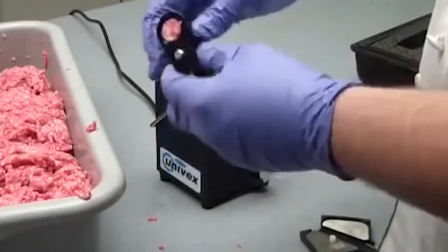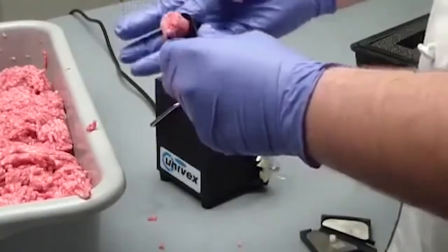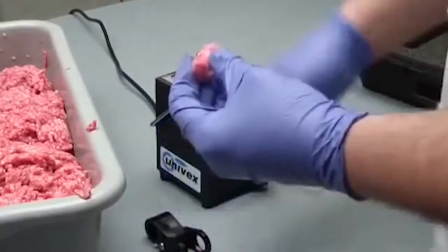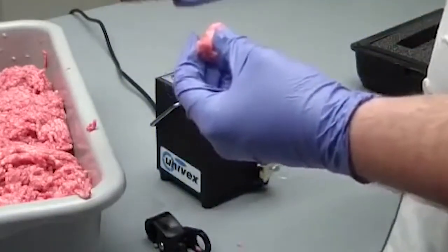Once you've measured your amount of meat, you can use your pinky to push out the sample. You're then going to put the sample inside of the cartridge.